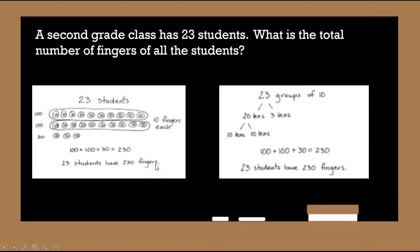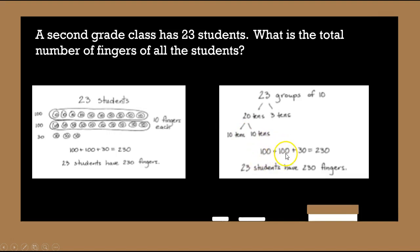Another way to solve this is by dividing these up. I wrote twenty-three groups of ten. I broke up the twenty-three: there are two tens and three ones, or twenty tens and three tens. We broke up the twenty with ten and ten. Ten tens equals one hundred, so one hundred plus one hundred plus the extra three tens equals two hundred and thirty. Twenty-three students have two hundred and thirty fingers.